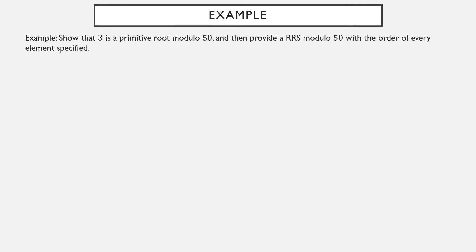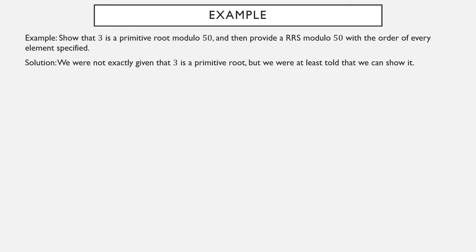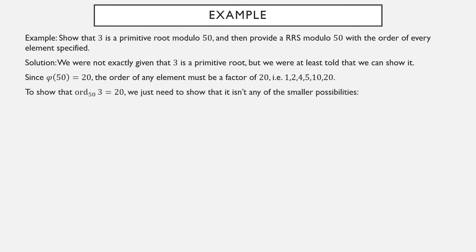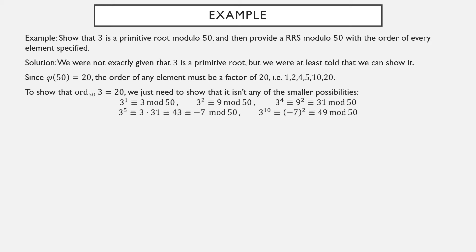Let's take a look at a sample problem: show that 3 is a primitive root mod 50, then provide a reduced residue system mod 50 specifying the order of every element. Notice we're not exactly given that 3 is a primitive root — we are told to show it. Since phi of 50 is 20, the order of any element must be a factor of 20: 1, 2, 4, 5, 10, or 20. To show that 3 is a primitive root, we just need to show that its order isn't 1, 2, 4, 5, or 10. So we start computing: 3 to the 1st, not equivalent to 1. 3 squared, not equivalent to 1. 3 to the 4th, not equivalent to 1. 3 to the 5th, 3 to the 10th — also not equivalent to 1.